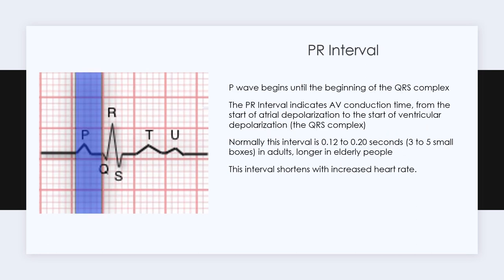Now let's go over the PR interval. The PR interval is measured from when the P wave starts to the beginning of the QRS complex, as you can see in the picture. This indicates AV conduction time — from the start of atrial depolarization to the start of ventricular depolarization. Normally this interval is 0.12 to 0.20 seconds, or three to five small boxes in adults, and it can sometimes be longer in elderly people.